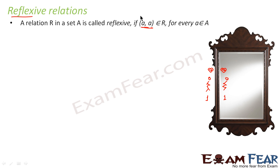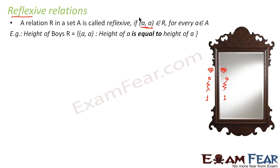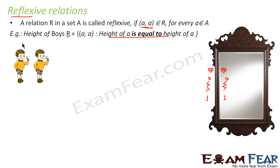For example, consider some boys in a class and the relation 'height of A is equal to height of A.' If I compare the height of this boy with himself, I say yes — the height of this guy is equal to the height of this guy. This is an example of a reflexive relation, because the equal-to relation is always reflexive.